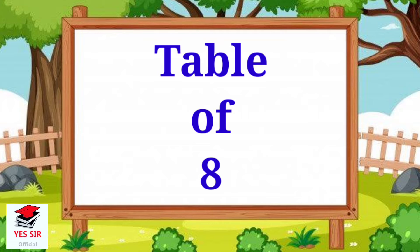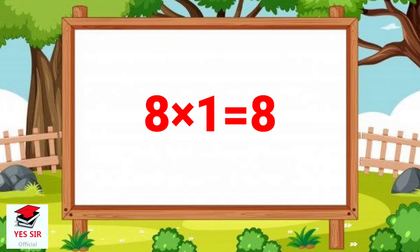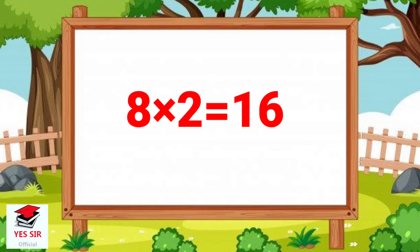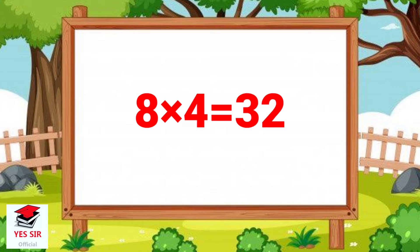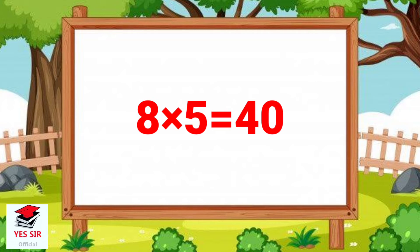Table of 8. 8 and 1 is equal to 8. 8 and 2 is equal to 16. 8 and 3 is equal to 24. 8 and 4 is equal to 32. 8 and 5 is equal to 40.